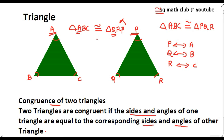So, two triangles are said to be congruent when the sides and angles of one triangle are equal to the corresponding sides and angles of the other triangle.